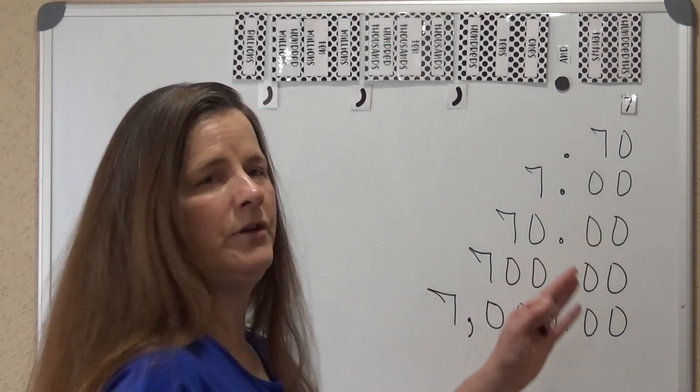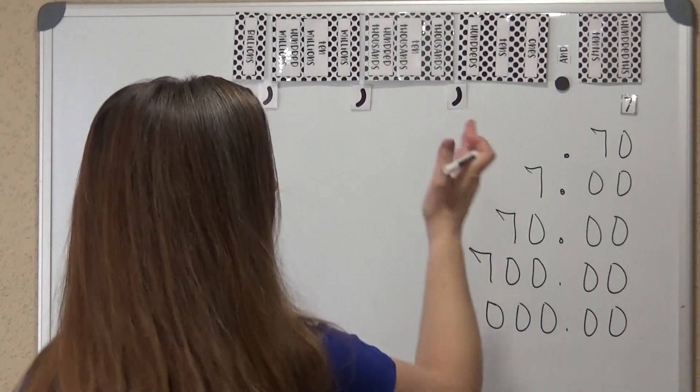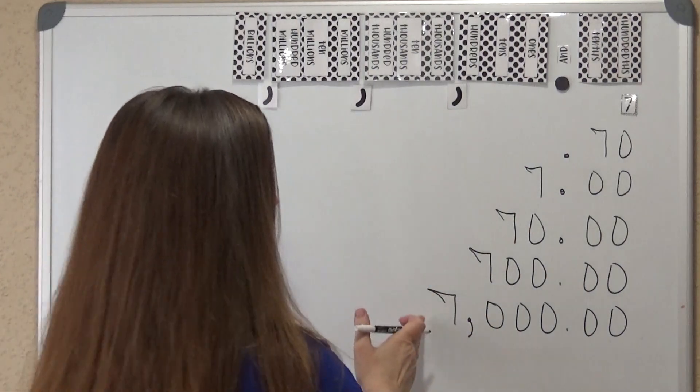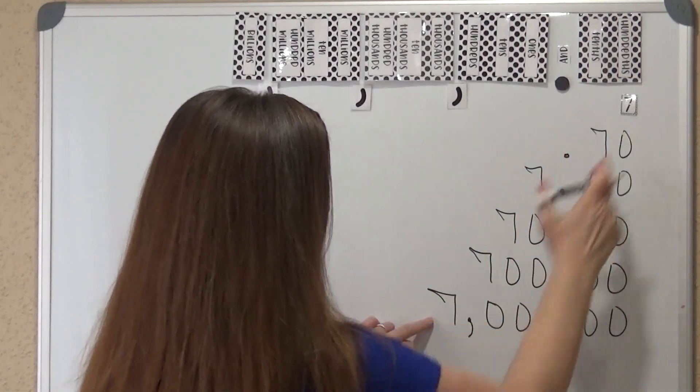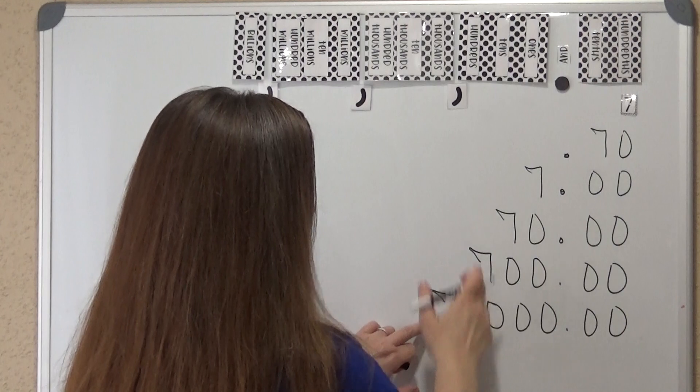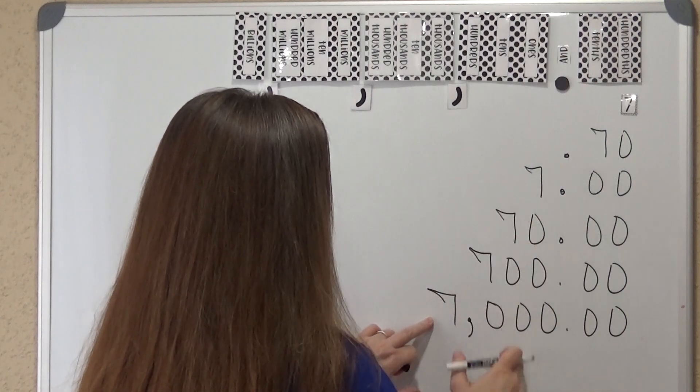As you can see, when we're comparing these numbers — comparing this number to this number — it would be 1 tenth, continuing on as 10, 100, 1,000, 10,000, 100,000.